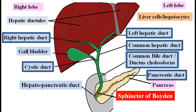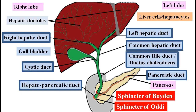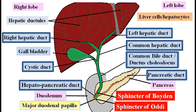The hepato-pancreatic duct receives bile from the liver as well as pancreatic juice from the pancreas. The hepato-pancreatic duct also has a sphincter called the sphincter of Oddi. When the sphincter of Oddi opens, bile and pancreatic enzymes enter the duodenum. The point where the hepato-pancreatic duct opens into the duodenum is called the major duodenal papilla.